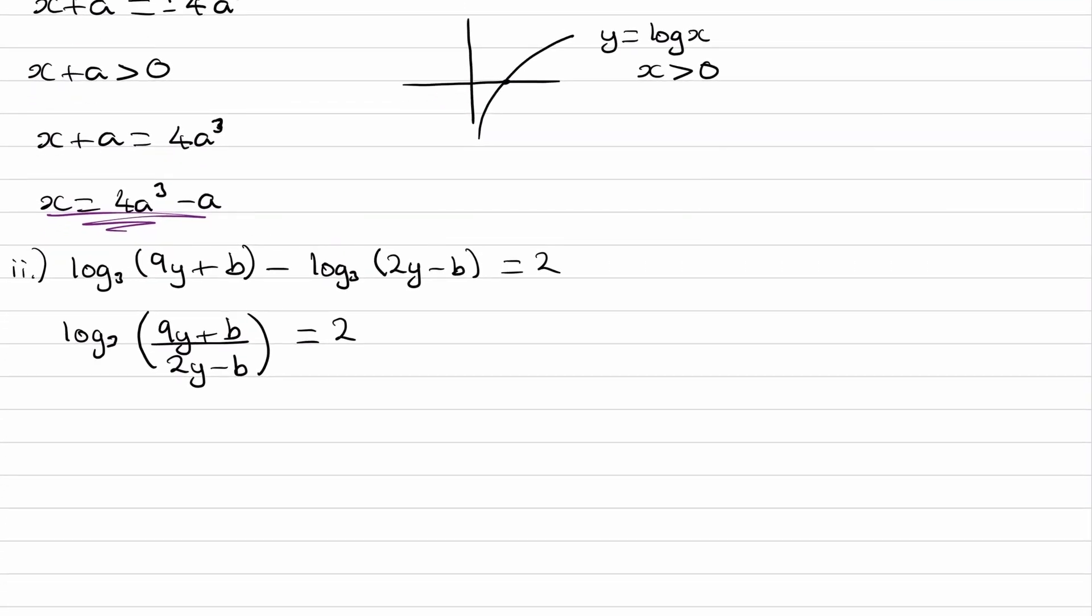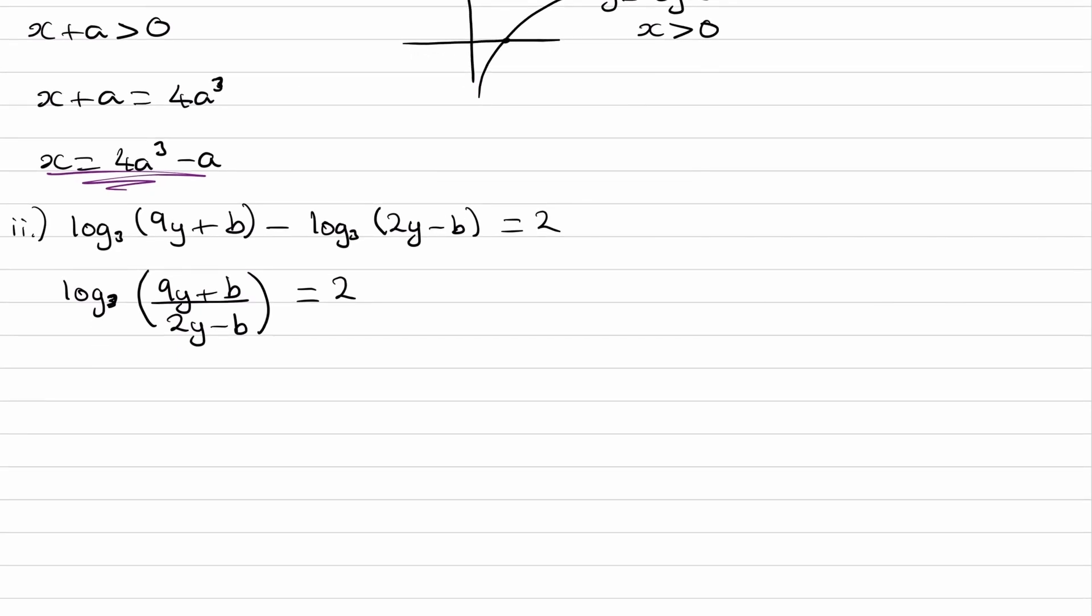And then to get rid of the log to the base 3, we can then do 3 to the power of both sides and we end up with (9y+b) over (2y-b) is 3 squared, which is 9. And now we just rearrange.